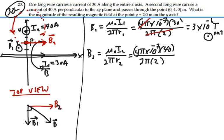So we're going to have a 4 pi cancel with a 4 pi. And so this is equal to 4 times 10 to the minus 6 Tesla. And it's to the right.